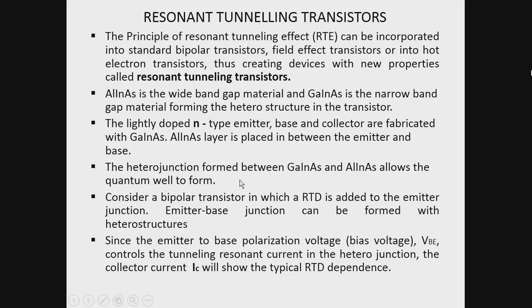The heterojunctions formed between Gallium Indium Arsenide and Aluminium Indium Arsenide allow the quantum well to form while giving a proper biasing. Let us consider a bipolar transistor in which a resonant tunneling diode is added to the emitter junction — that is, the emitter-base junction.